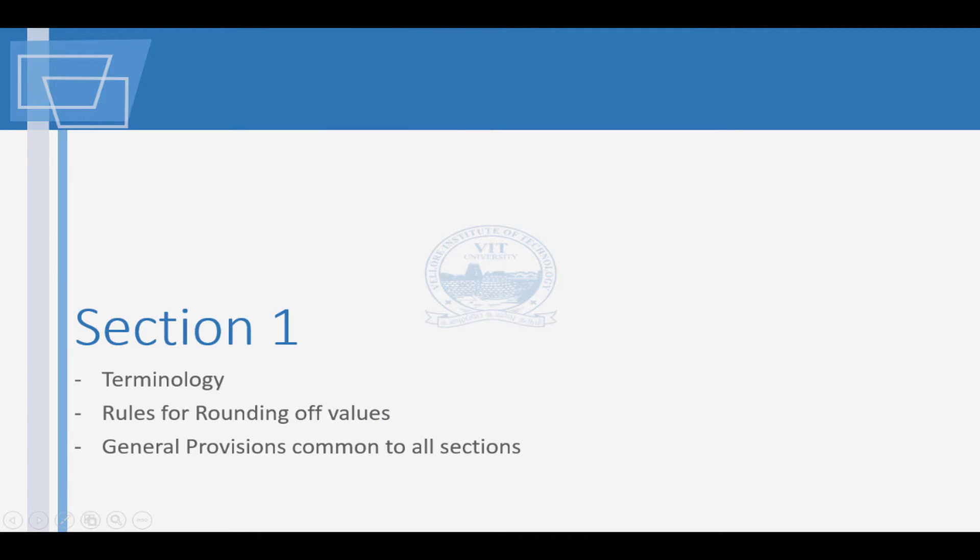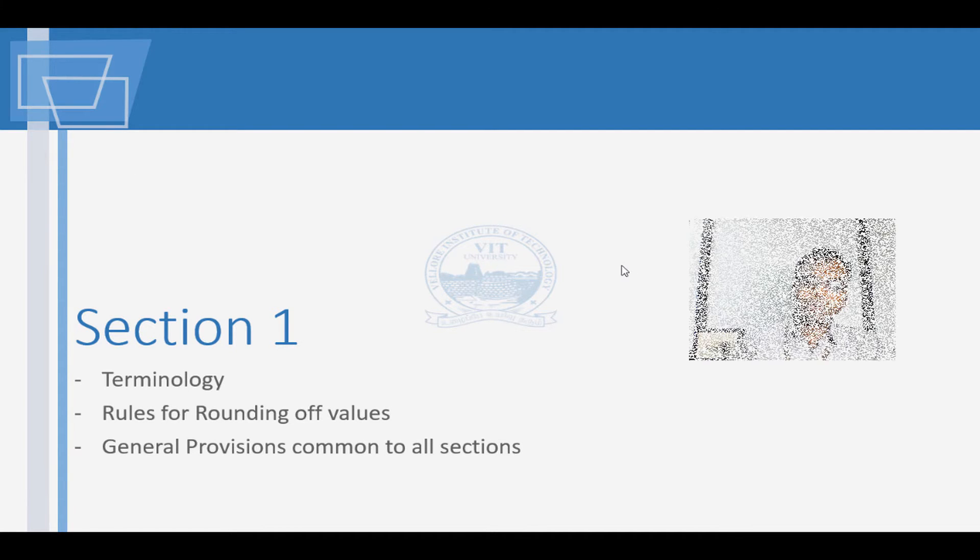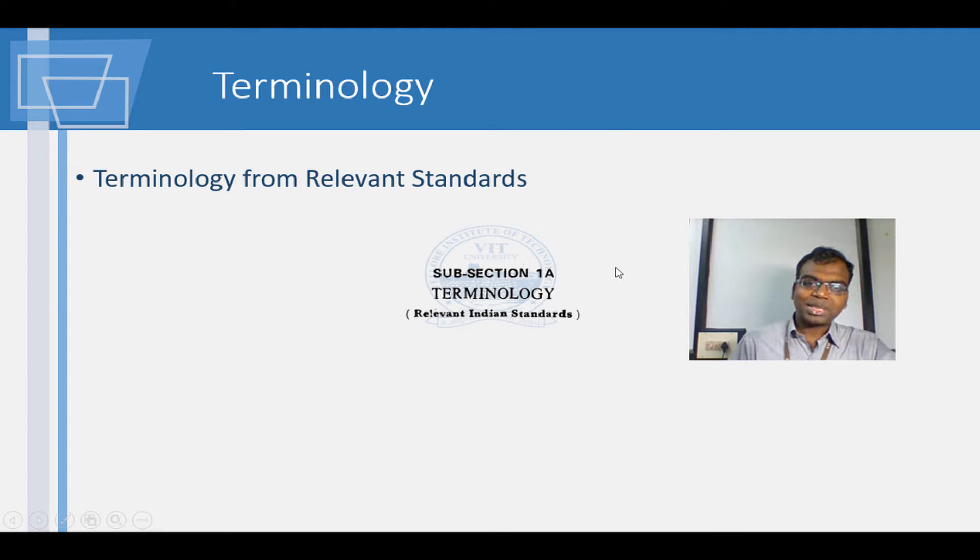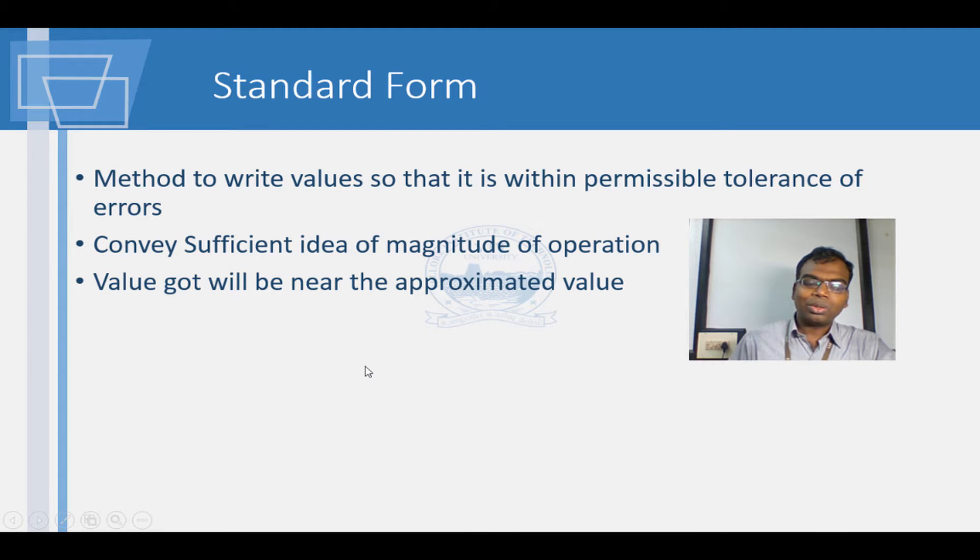Section 1 deals with common details which shall be used throughout the handbook. Terminology from relevant standards have been compiled in section 1a. Rules for rounding are given in subsection 1b. When numbers are written, they should present a consistent idea relevant to the quantity measured. When the rules of rounding are used, introduction of errors is minimized.